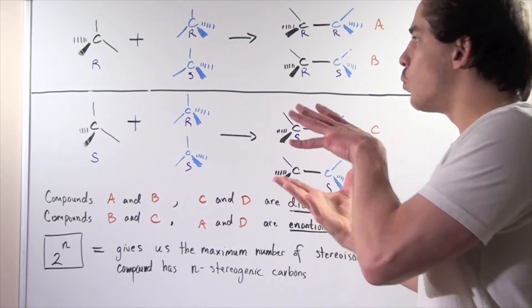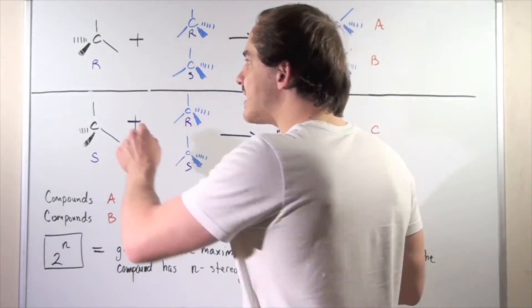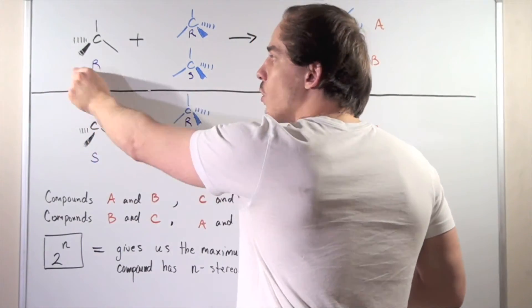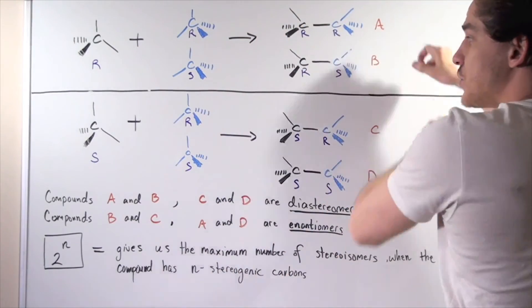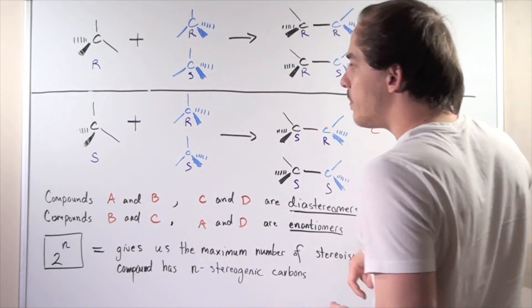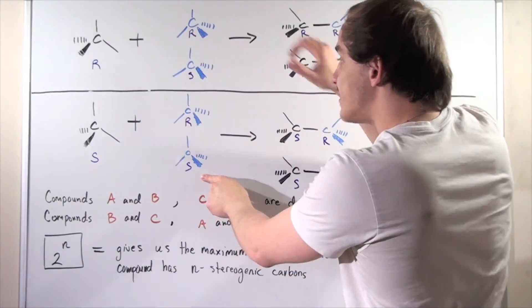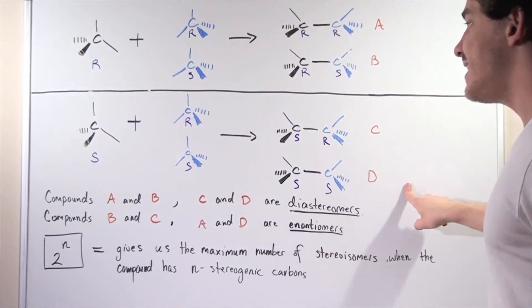Now look what we did. We essentially took our R, combined them with R and S to produce two different compounds. Then we took our S, we combined with S and R, the same S and R to produce C and D.